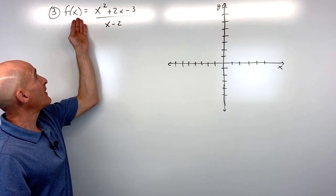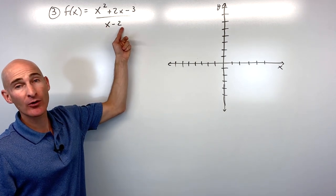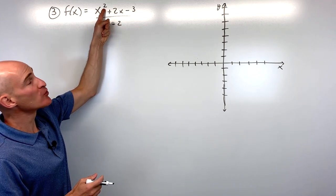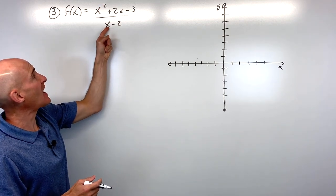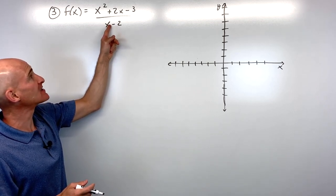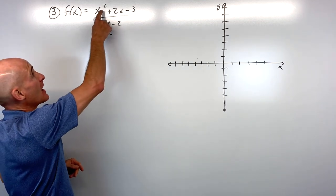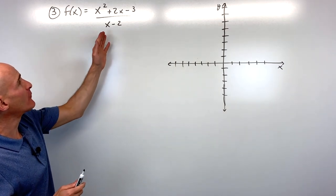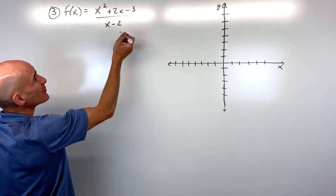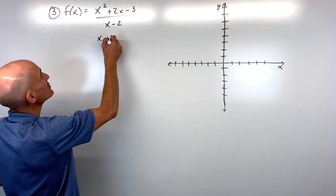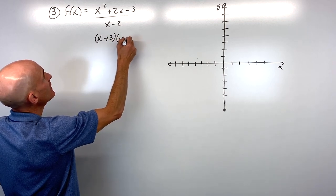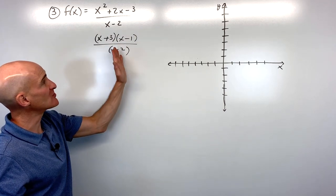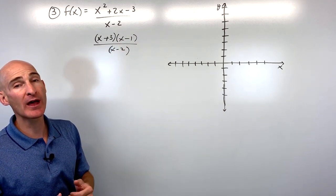Problem 3: f(x) = (x²+2x-3)/(x-2). The degree of the numerator is higher than the denominator's by 1, which tells us this will have a slant asymptote. First, let's factor: the numerator factors to (x+3)(x-1), all divided by (x-2). There are no canceling factors, so no holes in the graph.